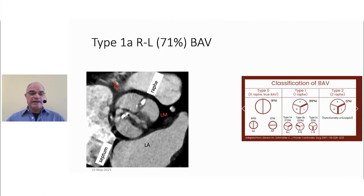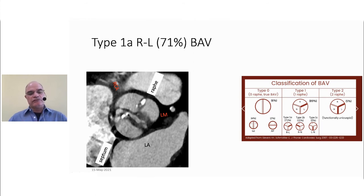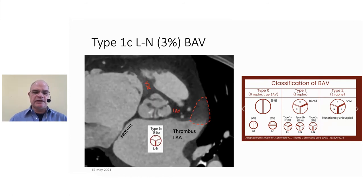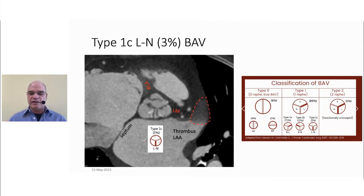The more common type 1 — here's an example of a raphe between the left sinus and the right sinus. You can see the left coronary artery, LAD, right coronary artery, and the interatrial septum. The three-dimensional high spatial resolution allows you to see this level of detail on the native aortic valve in the setting of thickened leaflets, stenosis, and coronary and cardiac motion. Here's a right-to-non-coronary fusion, or type 1b, with 15% prevalence. And lastly, the type 1c, where we have fusion between the left sinus and the non-coronary. The detail available by doing a four-dimensional CT is truly astounding.